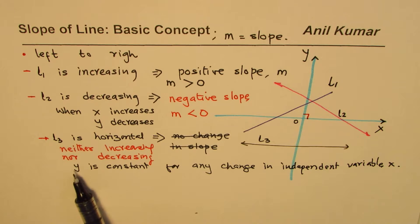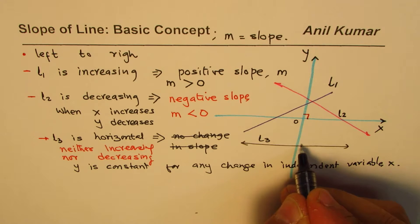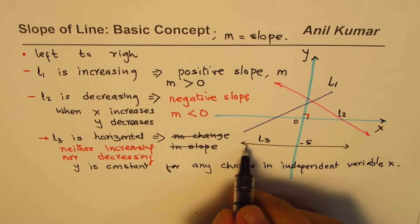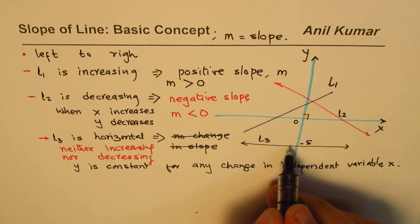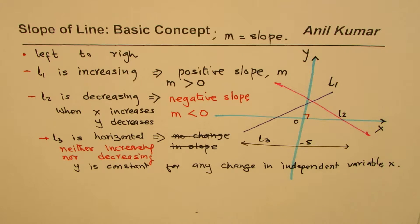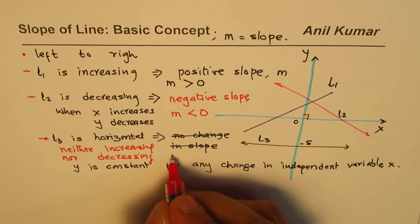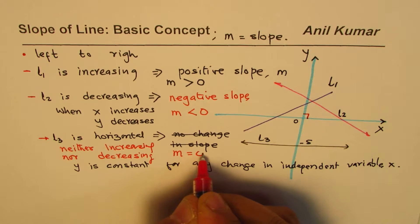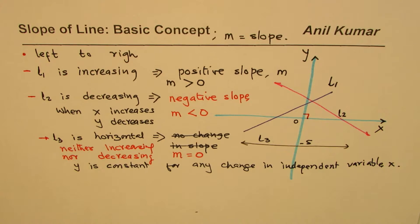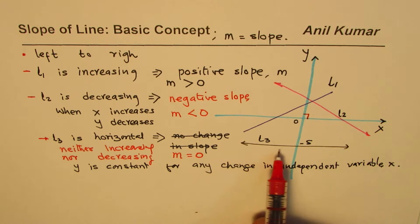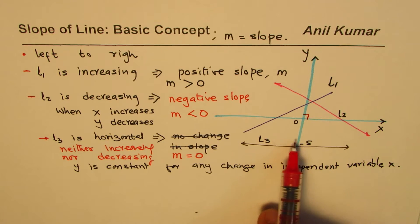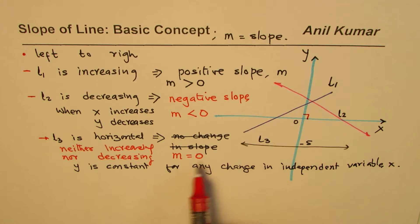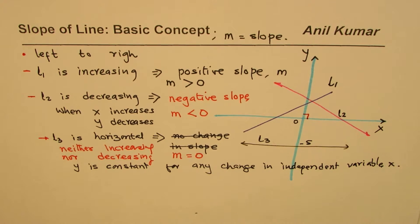The dependent variable Y is constant all throughout. Let's say this value is minus 5. As you move from left to right, this value is minus 5 all throughout. In this case, what is the slope? In such cases, we say slope M is 0 since it is neither increasing nor decreasing. No change. No change in elevation. It's neither increasing nor decreasing. The slope is 0.